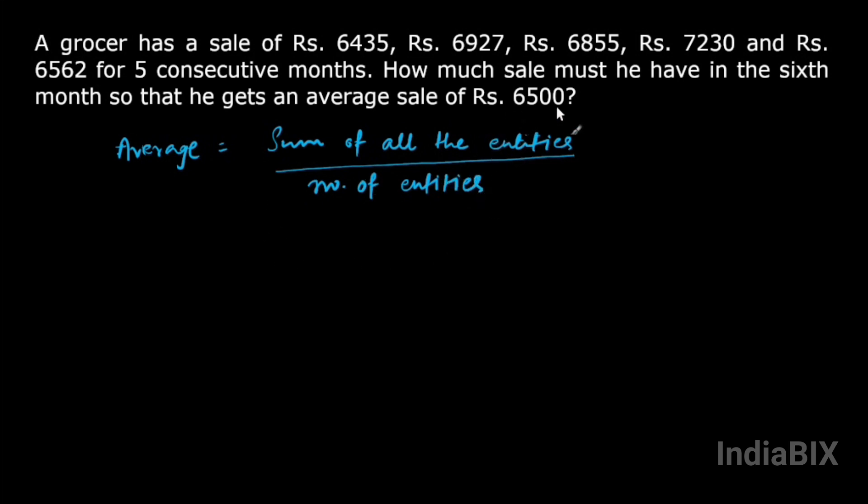Here the average value is rupees 6500 and sum of all the entities, sum of sale for five consecutive months plus for the sixth month. So it will be rupees 6435 for the first month, 6927 for the second month, 6855 for the third month, 7230 for the fourth month, and 6562 for the fifth month. And we don't know what is the sale of the sixth month so we will let the sale of the sixth month be x.